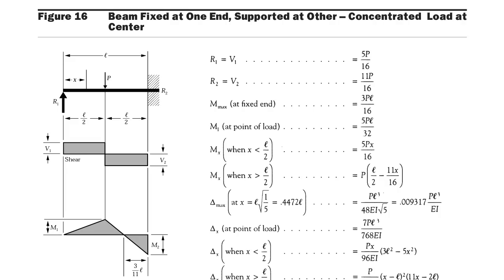The maximum bending moment is 3pl / 16. Under the point load, the bending moment value is 5pl / 32. The maximum deflection occurs at a distance of 0.4472l and its value is pl³ / (48EI × √5). Under the point load, deflection is 7pl³ / 768EI. Reactions are r1 = 5p / 16 and r2 = 11p / 16.